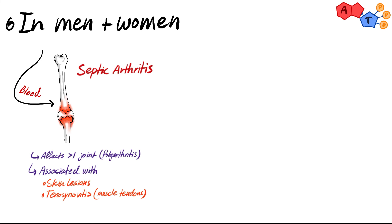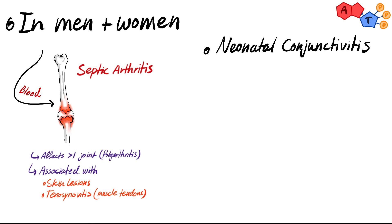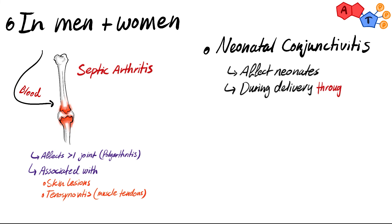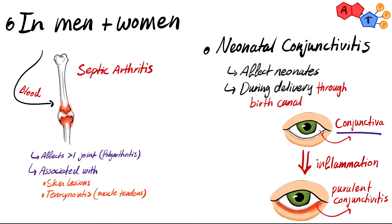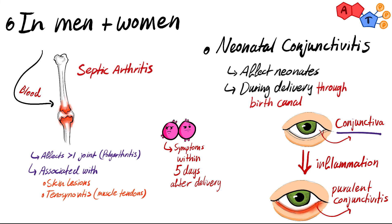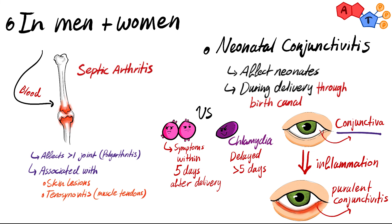For the last clinically relevant information, Neisseria gonorrhoeae can also affect neonates. The infection is transmitted from an infected pregnant woman to her baby during delivery through the birth canal, affecting the eyes and resulting in inflammation of the conjunctiva — also known as purulent conjunctivitis. The symptoms start to appear within five days after delivery. In contrast, purulent conjunctivitis caused by chlamydia is usually delayed beyond that.